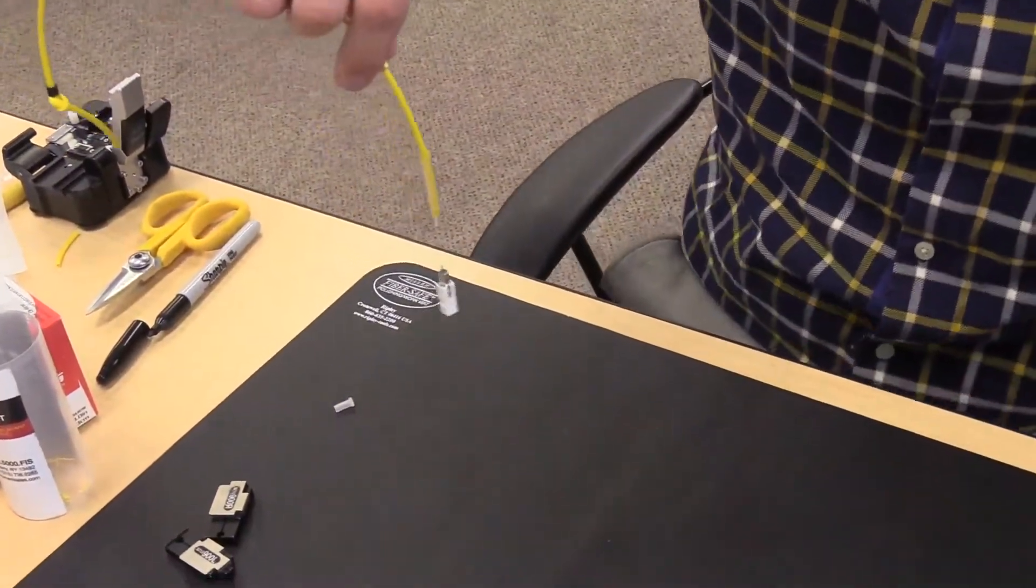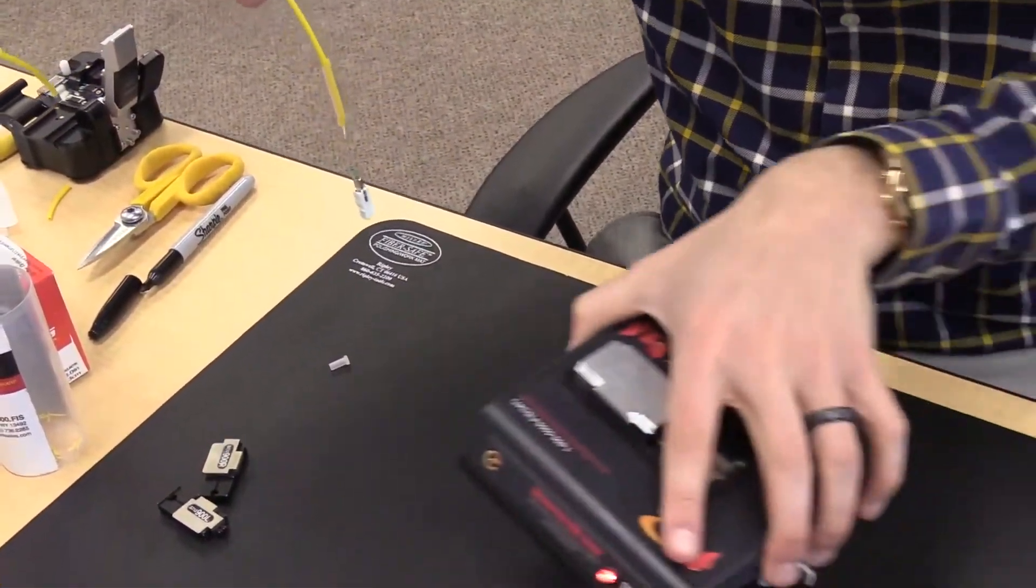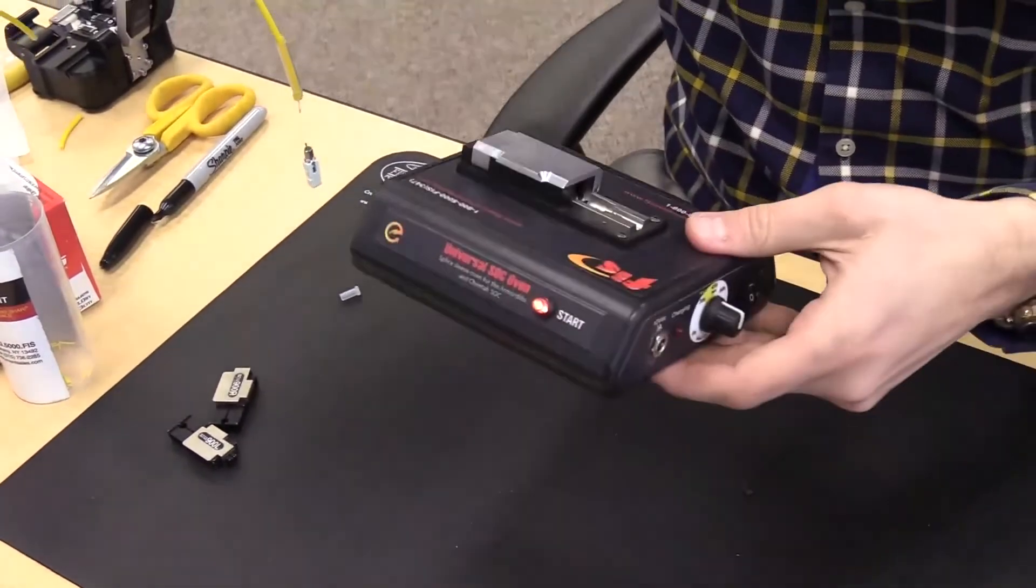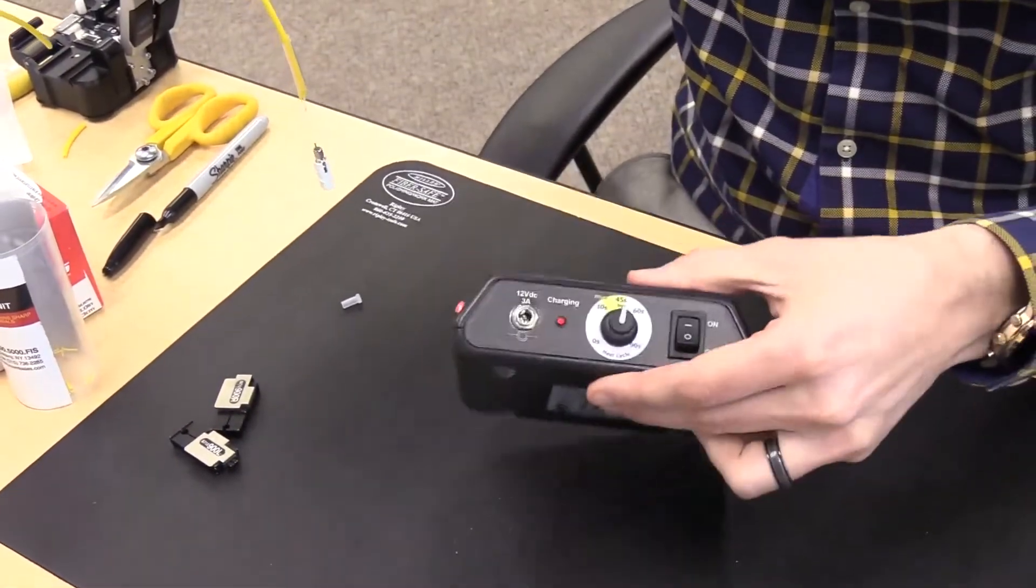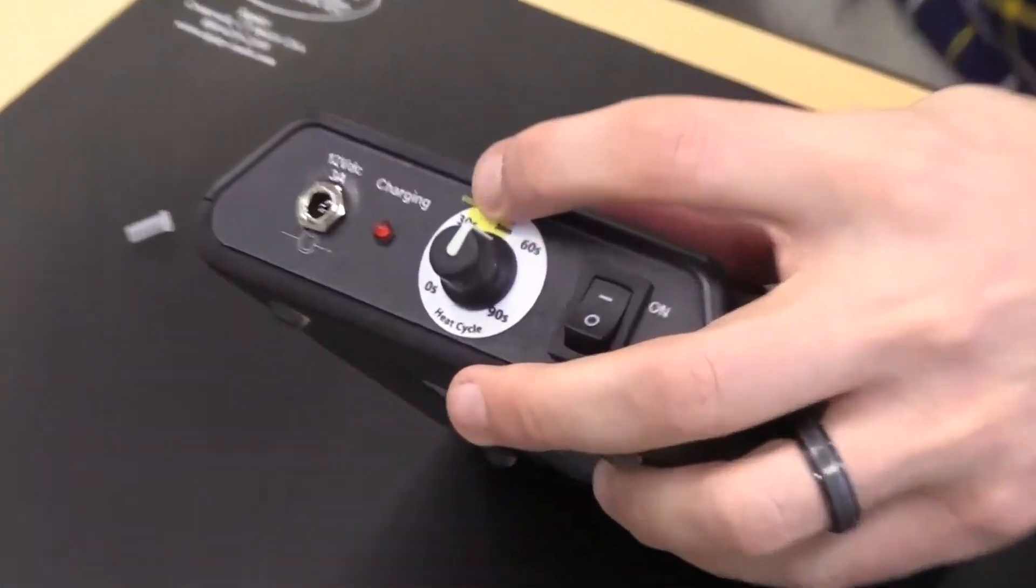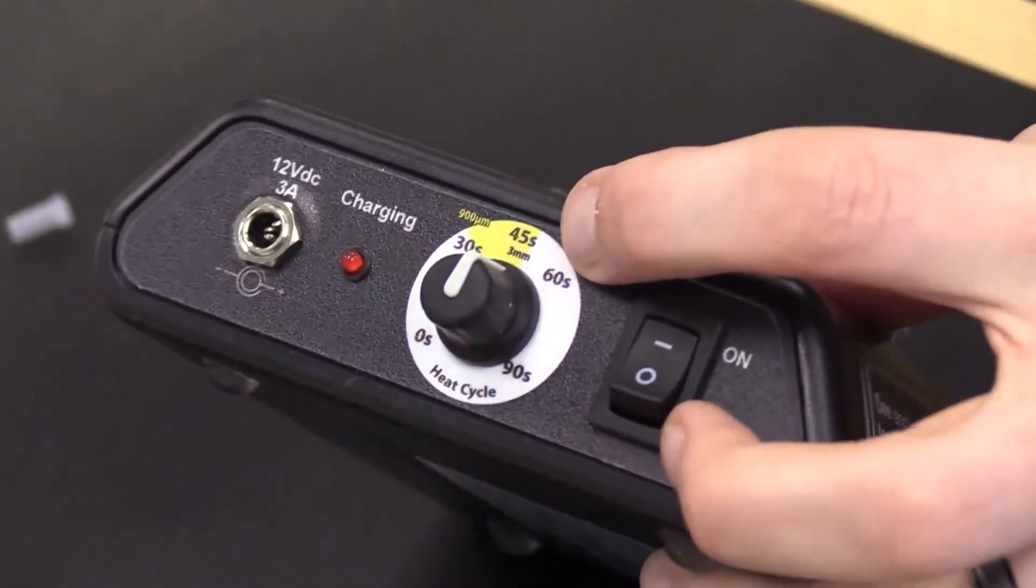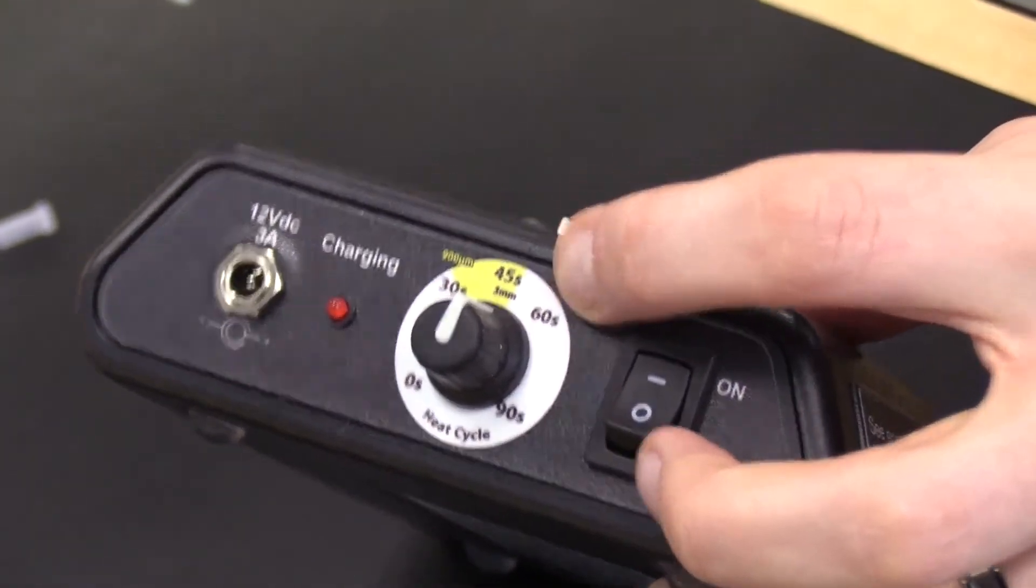Get the FIS universal splice-on connector oven to use for the next step of this termination. On the side of the oven, there is a knob to indicate the heater time for the type of splice-on connector. Set it to 3 millimeters or 45 seconds.